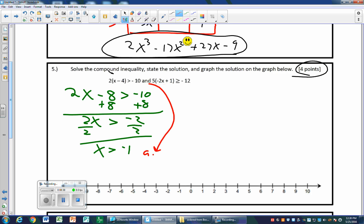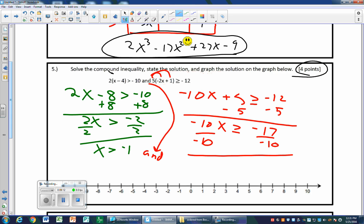And now I'm going to distribute for the other one: negative 10x plus 5 is greater than or equal to negative 12. I am going to subtract 5 from both sides - I'm doing the opposite operation. That's called the additive property of equality. Negative 10x is greater than or equal to negative 17. When I divide by a negative number, I do what? Dividing by a negative number, I do what? X is less than or equal to positive 1.7. I change the direction of the inequality when I divide by a negative number.